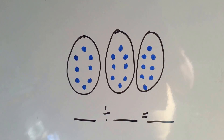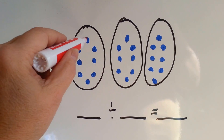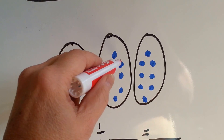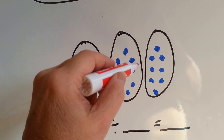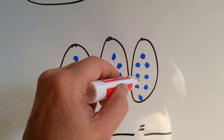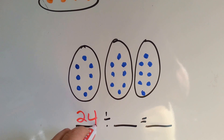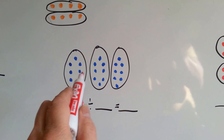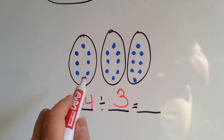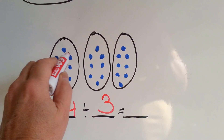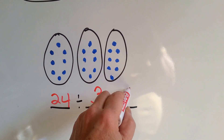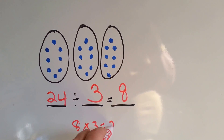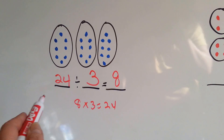Let's try this one. Let's count the total number of dots: 1 through 24. How many groups? 1, 2, 3. How many are in each group? 1, 2, 3, 4, 5, 6, 7, 8. 24 divided by 3 equals 8. Because 8 times 3 equals 24. See how it's the inverse? It's the opposite of division.